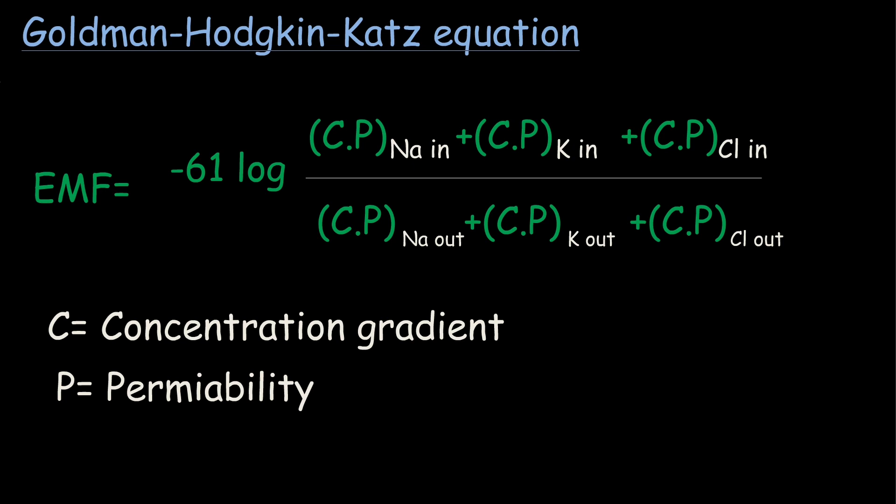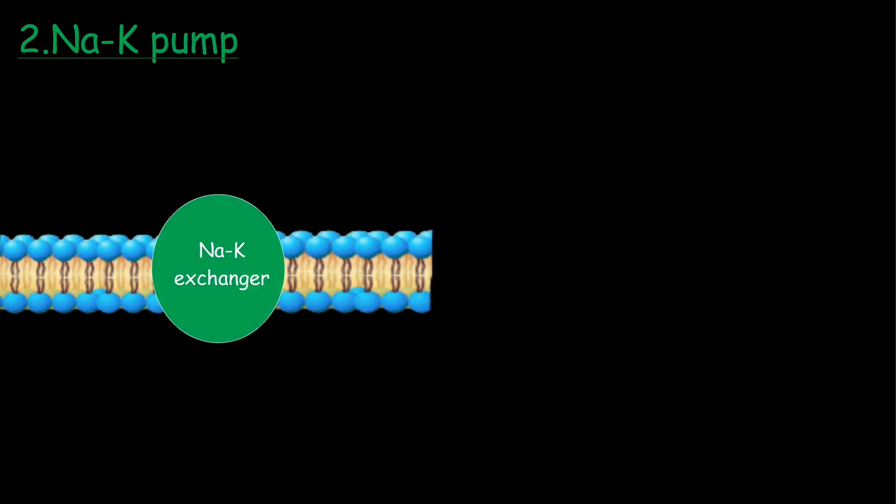Next cause for resting membrane potential is sodium-potassium pump. It is a primary active transport which uses ATP to transport 3 sodium out and 2 potassium ions in. Hence, the net result is more sodium and more positive ions in the extracellular fluid and more potassium ions in the intracellular fluid, hence maintaining the concentration gradient as well as the negative resting membrane potential.